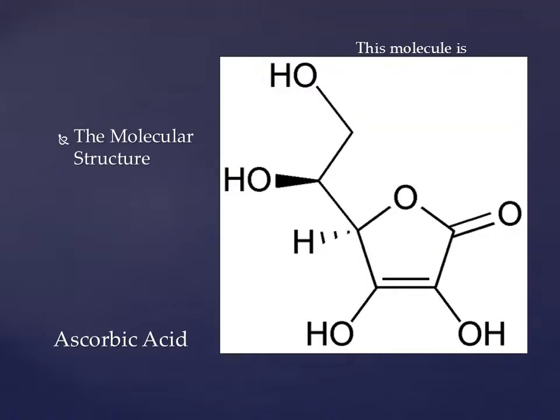The molecular structure is as shown here. The chemical name is ascorbic acid. We see it's a structure with six carbons, some oxygens, some hydrogens. We might figure this is related to the glucose molecule, which also has a similar composition.